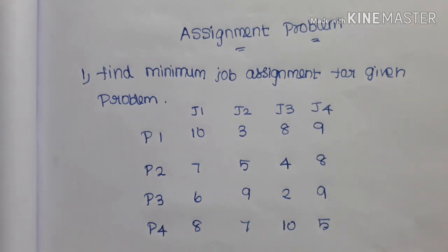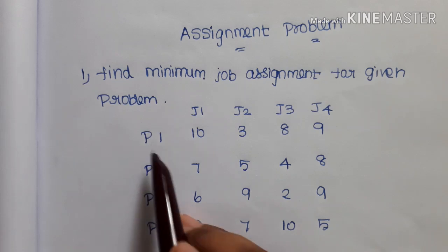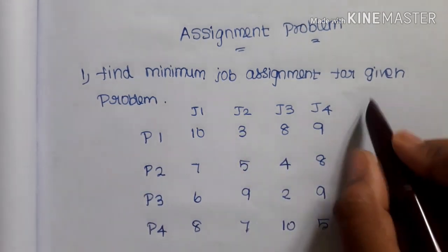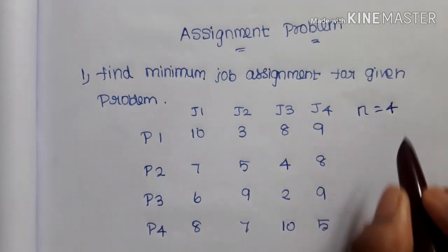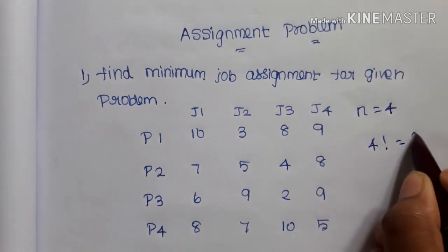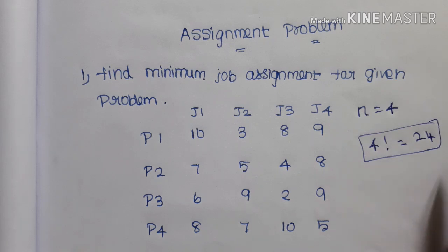First, we need to find the steps. There are 4 persons and 4 jobs, so the value of N is 4. The 4 factorial value is 24, so we need to solve 24 steps.